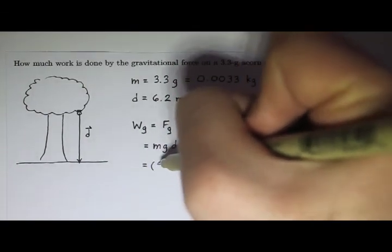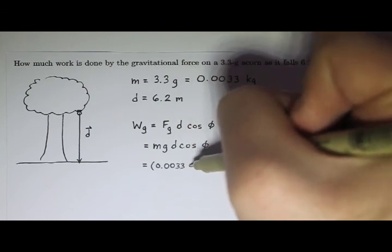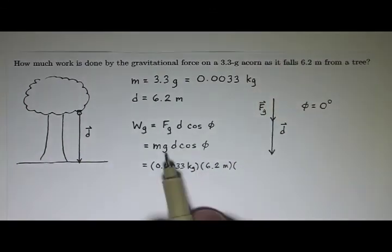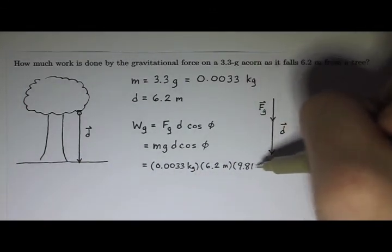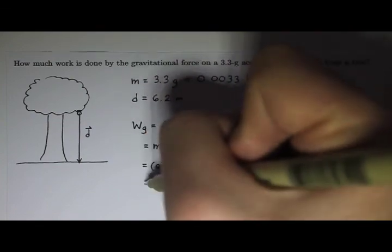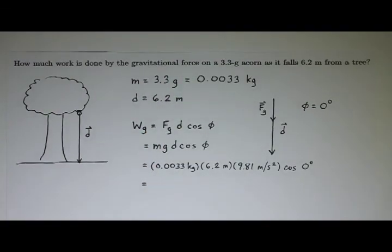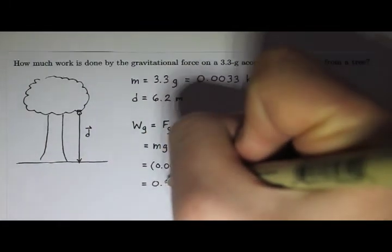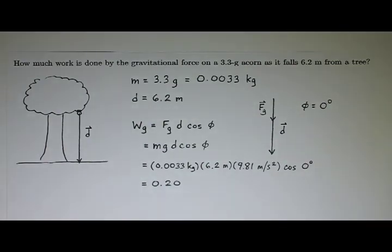So the mass is 0.0033 kilograms. And then the displacement is 6.2 meters. And oops, I forgot to include g. Let's put g in there. 9.81 meters per second squared. And then the cosine of zero degrees. Okay, and so now I can type this into my calculator. Let me do that right now. And so 0.0033 times 6.2 times 9.81. And then the cosine of zero is 1, so I don't need to put that in. And I get 0.20, and I'll round it to that, joules.